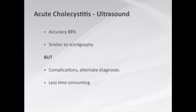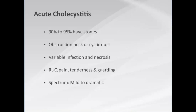Ultrasound has an accuracy of about 88% in the diagnosis of acute cholecystitis, very similar to scintigraphy. But ultrasound has advantages: it can diagnose acute cholecystitis, demonstrate complications such as gangrenous change or perforation, and offer alternate diagnoses when the gallbladder is normal. The majority of patients with acute cholecystitis have gallstones, with pathophysiology involving calculus obstruction of the gallbladder neck and cystic duct, leading to distension, infection, and necrosis.